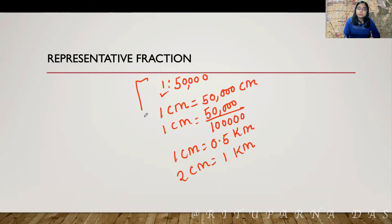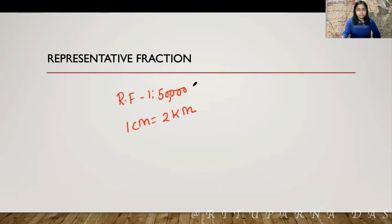But, you don't need to do these things because that is not there in the syllabus. I just wanted to show that this representative fraction, that means 1 is to 50,000, means 2 cm is equal to 1 km. Both are same. This is my RF scale and this is my verbal scale.